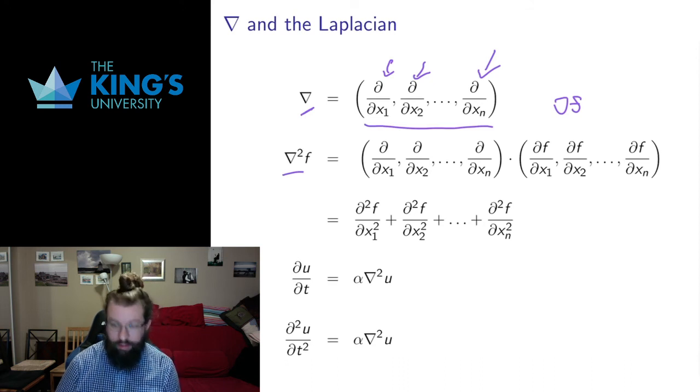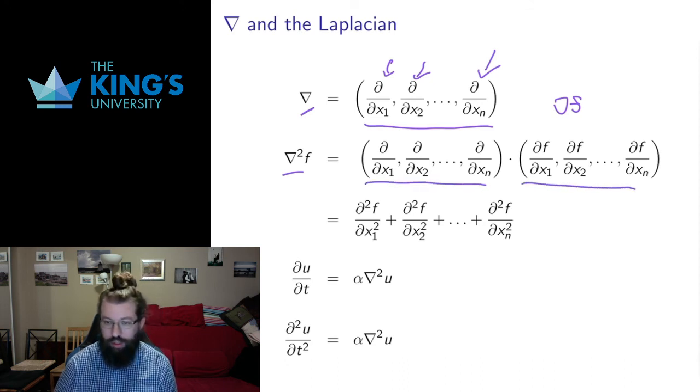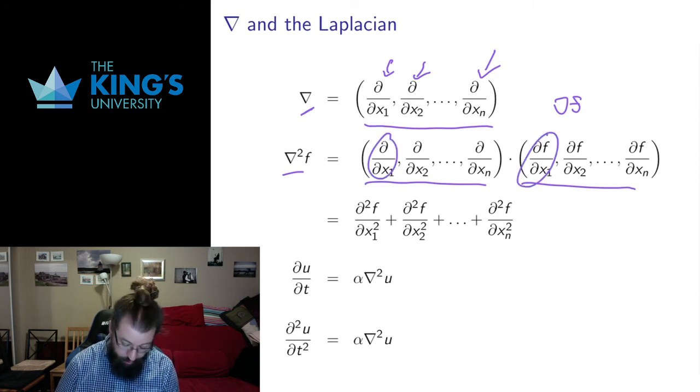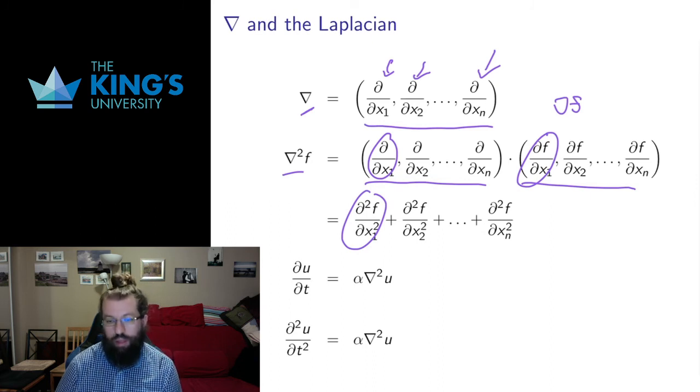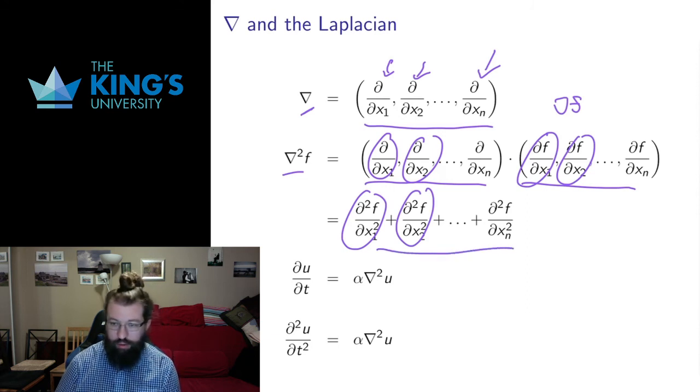Nabla squared is a thing that happens when you take this and take the dot product with the gradient. And that's going to be the partial in x, the partial in x again is going to give me the second partial in x1, partial in x2, partial in x2, give me the second partial in x2, all the way up to the second partial in xn. So it's the sum of the pure second partials.